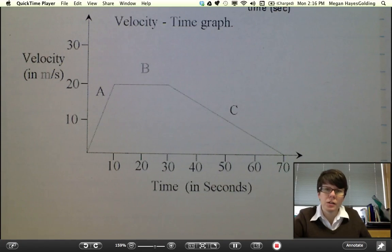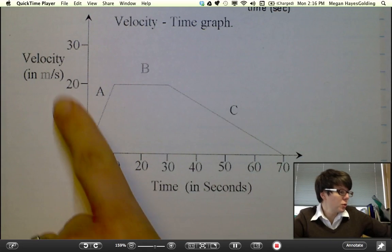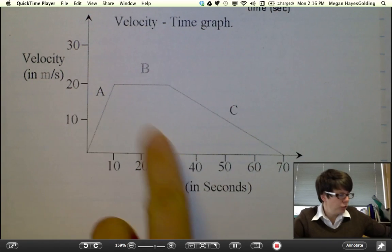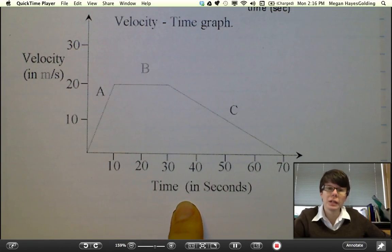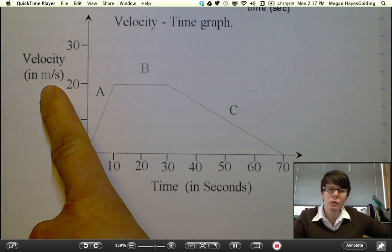When is the velocity constant in this graph? Note that this graph is a velocity versus time graph. To find the velocity in this graph, I simply read the y-coordinate.